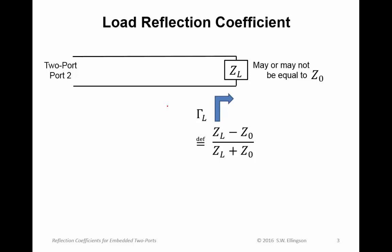For the load reflection coefficient: in this diagram I'm showing a transmission line connecting us to the output of the two port, with a terminating impedance Z sub L that may or may not be equal to the characteristic impedance. We define the load reflection coefficient in the usual way — the voltage reflection coefficient for the load impedance relative to the characteristic impedance. Note that this load reflection coefficient depends only on the load impedance. The characteristic impedance is just something we use to define S parameters, so it's just another way of talking about the load impedance.